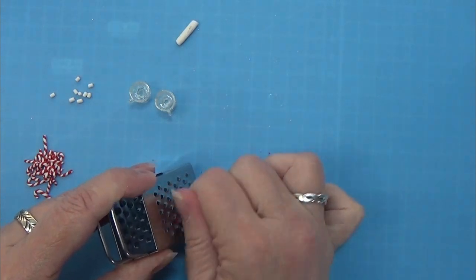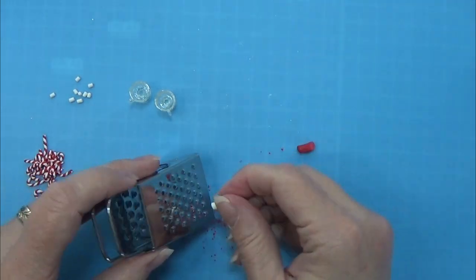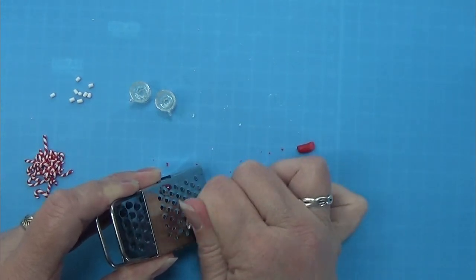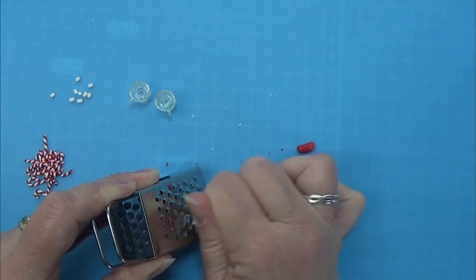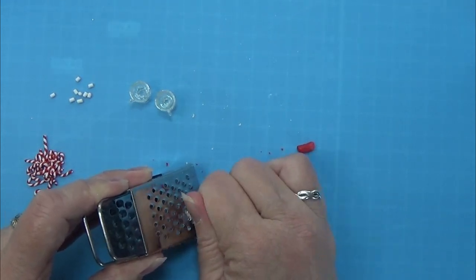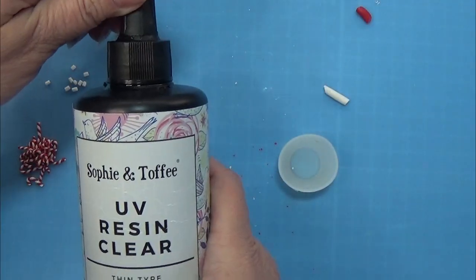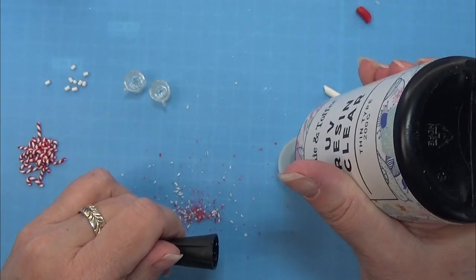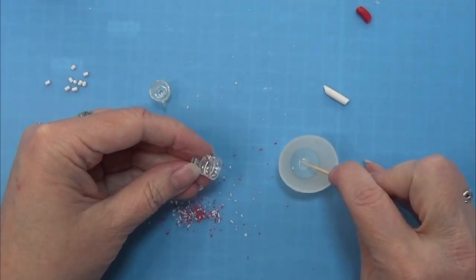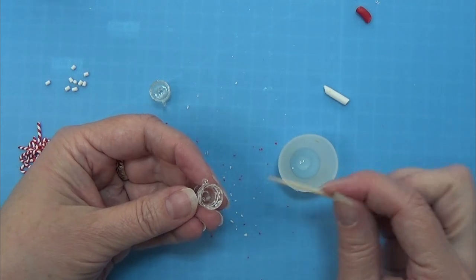So I have this miniature grater that really works. And I baked a piece of red clay and a piece of white clay. And then I am grating that into the sprinkles for the top of the glass. When I have enough, I am taking my UV resin and then I am just popping a dot of that into this little bowl.